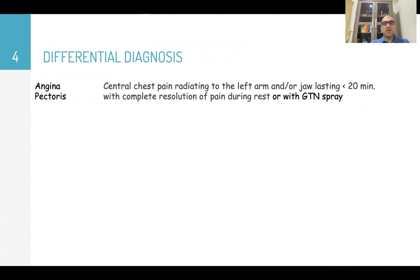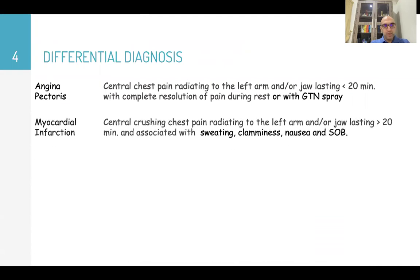For differential diagnosis of chest pain, angina will be like central chest pain radiating to left arm or left shoulder or radiating to the jaw, it lasts for less than 20 minutes and complete resolution of pain by rest or nitrate spray. Myocardial infarction is central crushing chest pain radiating to left arm or left shoulder or jaw, and it lasts more than 20 minutes and is associated with sweating, clamminess, nausea, or shortness of breath.